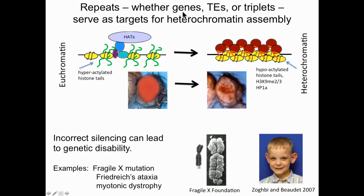Repeats serve as targets for heterochromatin formation — they range from whole genes to transposable elements distributed throughout the genome, down to simple triplets, just three nucleotides repeated over and over. There is a group of human mutations represented as repeat expansions that serve as targets for local heterochromatin formation, resulting in loss of gene function — in particular, fragile X mutation, Friedrich's ataxia, and myotonic dystrophy.